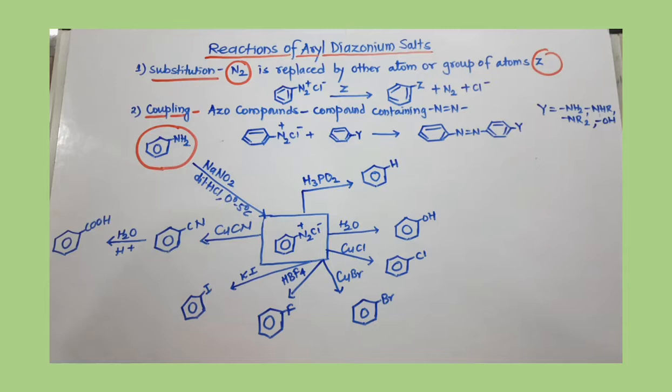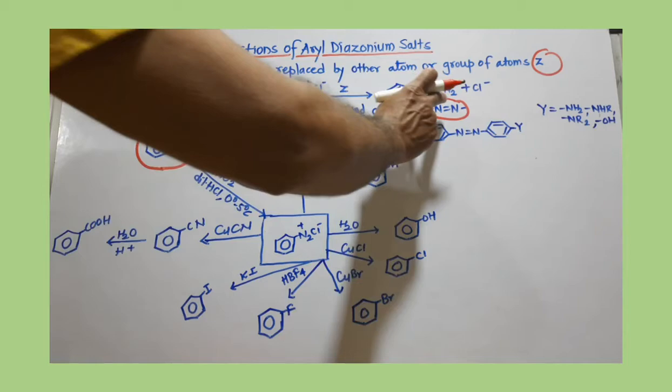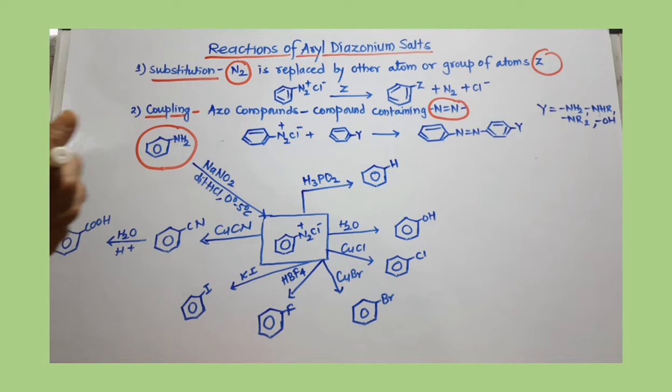The second type is the coupling reaction. In coupling, a compound containing the azo group — N=N — is formed. This group is called the azo group, and the compound is called an azo compound. You can prepare azo compounds this way.